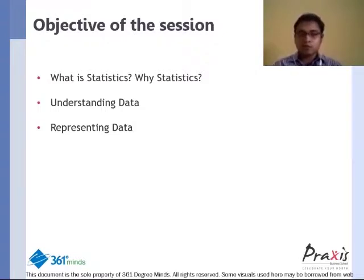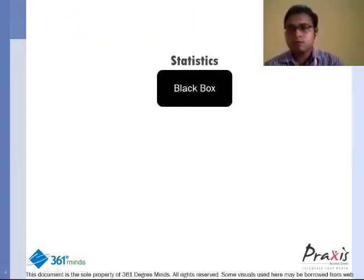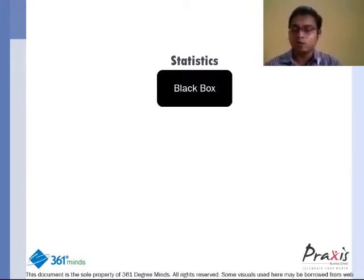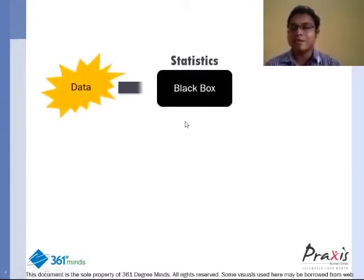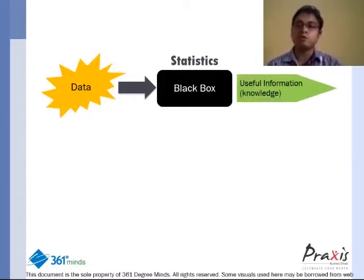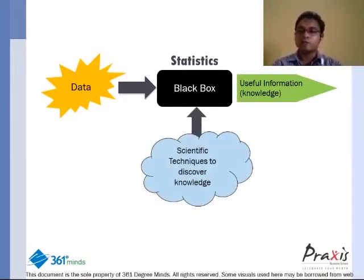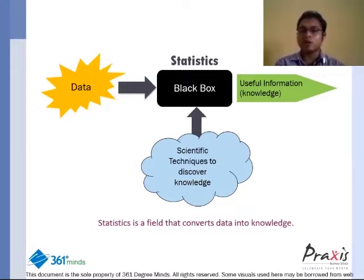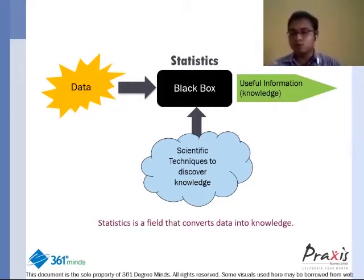Our objective is to discuss the uses of statistics. If you say we do not know anything about statistics, let us consider it as a black box — we have no idea what is going on inside it. But if you put some data inside it, this field has the potential to convert data into valuable, useful information. What goes on behind this black box is scientific techniques to discover knowledge. So we can say that statistics is basically a field that converts data into knowledge, and as we move on, we are going to uncover this black box slowly.